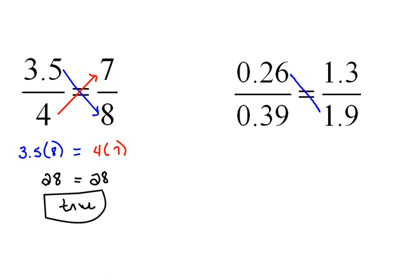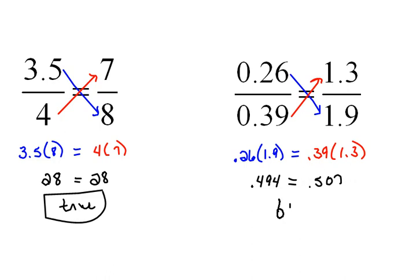Here we have another one that's using all decimals. So let's do our cross-product technique. So 0.26 times 1.9 hopefully will be equivalent to 0.39, let me write that better, 0.39 times 1.3. Okay, so multiplying these decimals, 0.26 times 1.9, and we get 0.494. Hopefully, that will be equal to 0.39 times 1.3. So again, use your multiplication of decimals, or you can use your calculator, and we get 0.507. Now, these two things are not true. So this is a false proportion. This is not a true original statement.